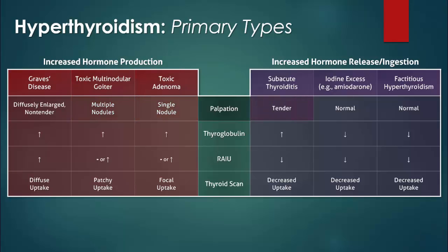In cases of increased hormone release or ingestion, the thyroid will be normal upon palpation, though with subacute thyroiditis it may be tender. Increased levels of thyroglobulin are suggestive of increased hormone production, though thyroglobulin may also be elevated in cases of subacute thyroiditis.